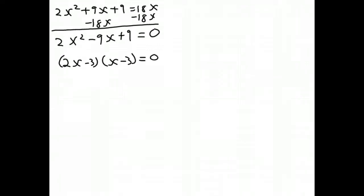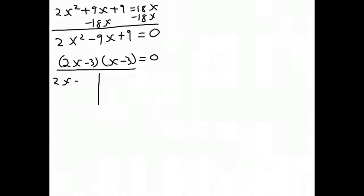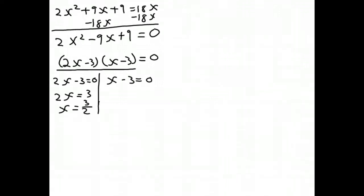Those of you who remember this from solving quadratic functions: when two factors multiply together and equal 0, that means one or both of them are equal to 0. So we set each factor equal to 0 and solve. On the left side, we get 2x equals 3, and that means x is equal to 3 halves. On the right side, we get x equal to 3. So those are two possible answers.